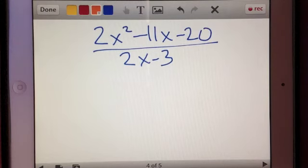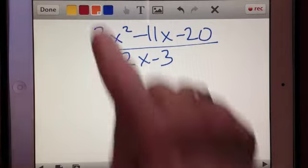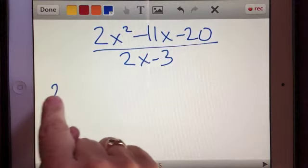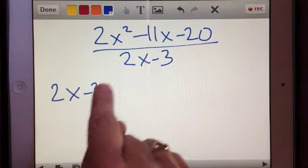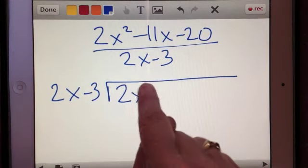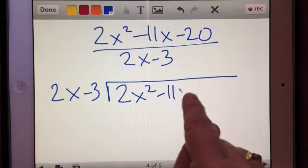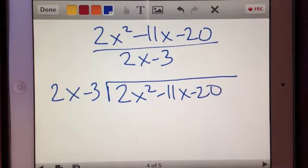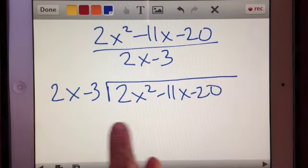Okay, so what if we had 2x squared minus 11x minus 20 divided by 2x minus 3? First of all, I'm going to rewrite this in long division form. And as these expressions get a little bit longer and more complex, it's going to get harder to write on this pad.